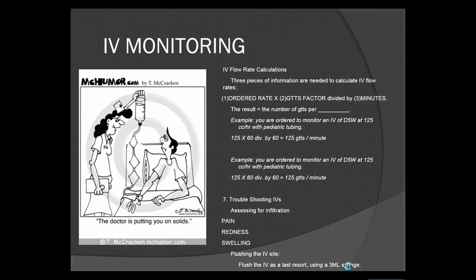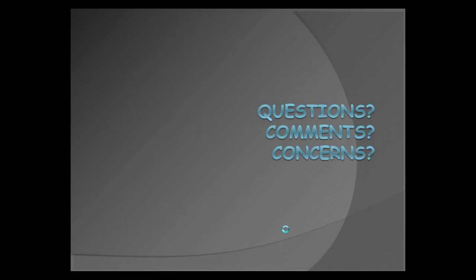Next we'll look at assessing for infiltration. Assess whether the patient is having pain around the IV site and note any redness or swelling. If necessary and if able to do so per protocol, flush the IV site as a last resort using a 3cc syringe. Any questions, comments, or concerns can be directed towards your instructor of record. This concludes the basic pharmacology portion of the class. Good luck and good night.